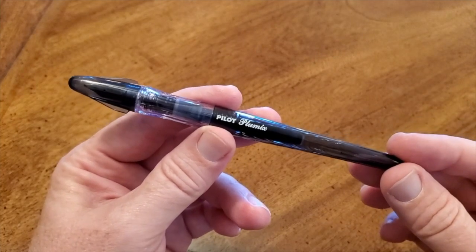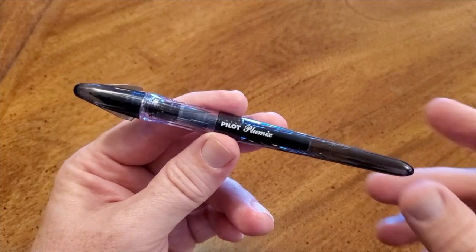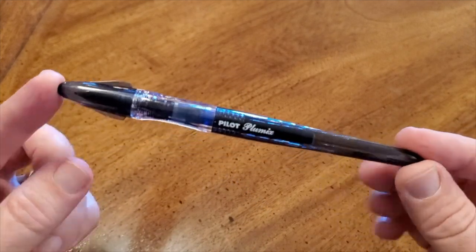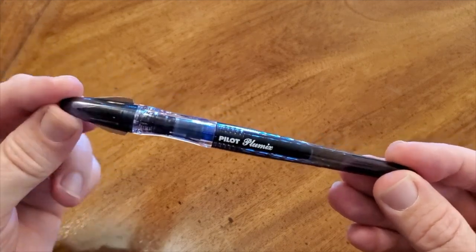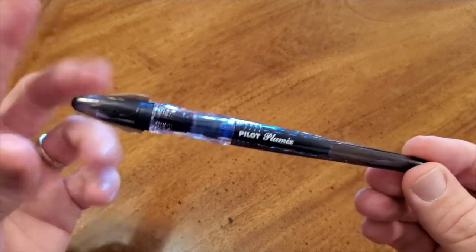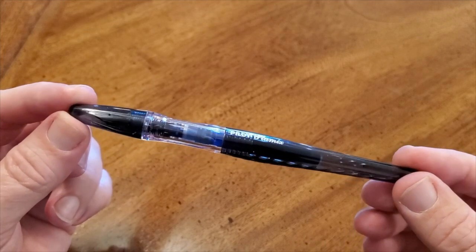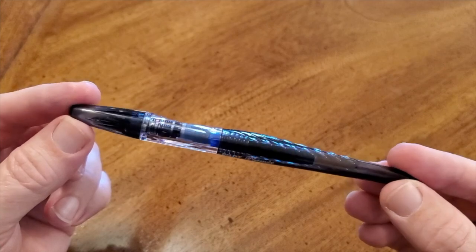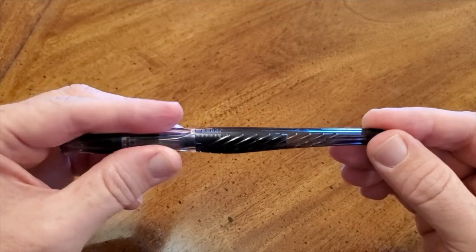Here is our close-up of the Pilot Plumix. You can see they, you can't mistake what pen it is, it's right there on the side. You can see better now what I mean by the look of the squid on the cap. It's an unusual cap. There is no clip, no way to just throw that in a pocket, which doesn't bother me but it might bother some. You notice the shape of the pen.